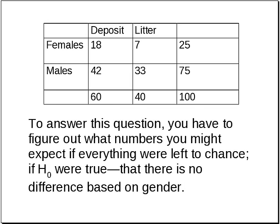To answer this question, you have to figure out what numbers you might expect if everything were left to chance — that is, if the null hypothesis were true, that there is no difference based on gender. In that case, you would expect the responses to be equally distributed through all the possibilities.